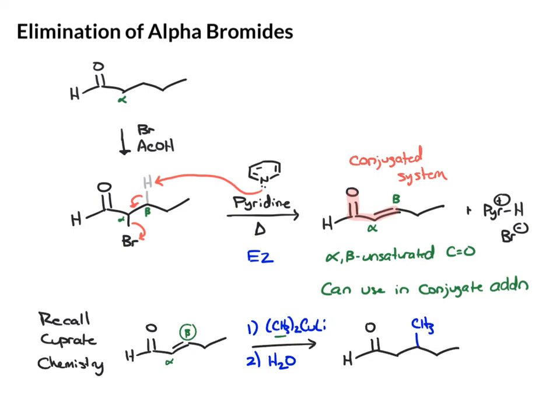So in terms of synthesis, keep this reaction sequence in your back pocket. If you're starting with some carbonyl compound and you need to add something at the beta position, you can potentially brominate, eliminate, and then add that group via a cuprate.